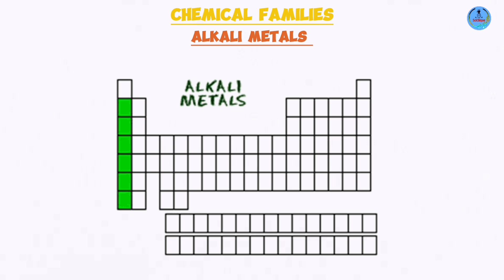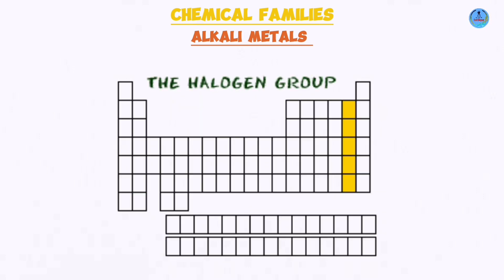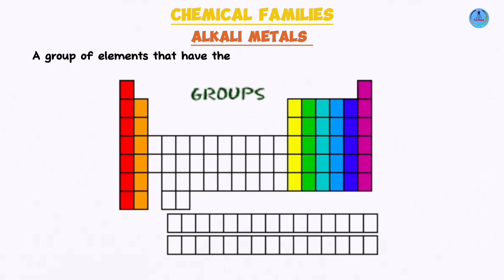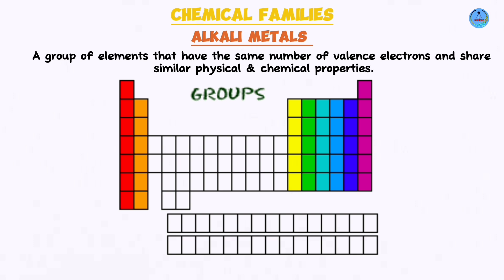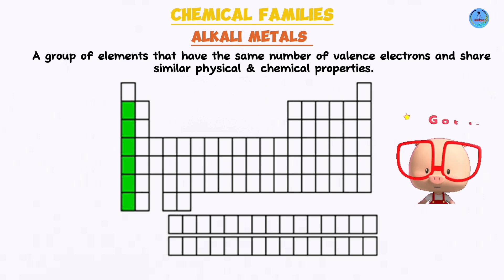I'm starting a new revision series targeted at chemical families — specifically alkali metals, alkaline earth metals, and halogens. In chemistry, a chemical family is a group of elements that have the same number of valence electrons and therefore similar physical and chemical properties. In today's lesson we are going to do a deep dive on alkali metals, such that by the end of the two-part lesson you will be well prepared.